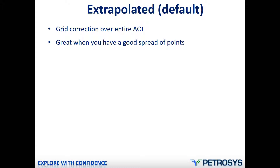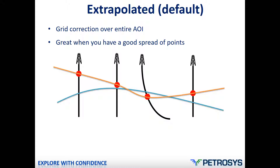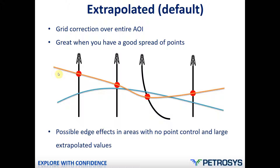In a schematic drawing we have our wells and control points, and the seismically derived grid is running somewhere here. This method will correct the grid over the entire area of interest, running through all those points. What you need to be aware of is that sometimes away from the control points, where there are areas with no control points, it can extrapolate to quite large values at the edges of the grid. If this happens you can set the minimum and maximum value of correction, which will stop the algorithm from going into very large extrapolated values.